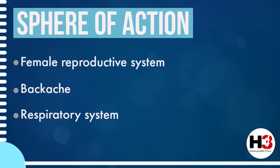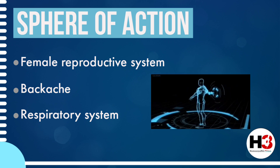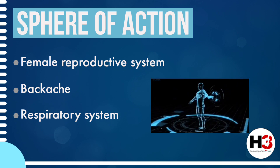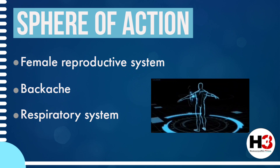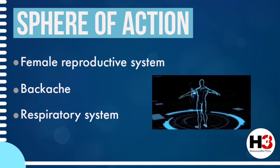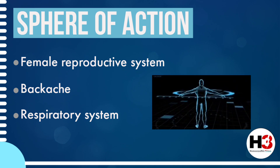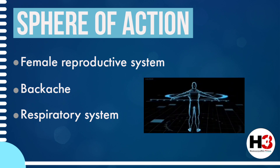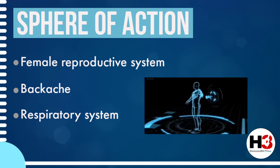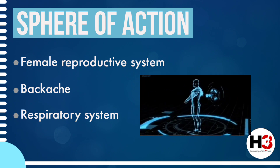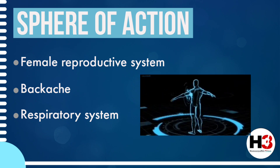Now that we have understood the mental aspects of a Kali Carb personality, let's look at the various important organs on which it acts wonderfully. The main sphere of action of Kali Carb includes the female reproductive system, backache, and the respiratory system. Let's understand its action on all these organs one by one.